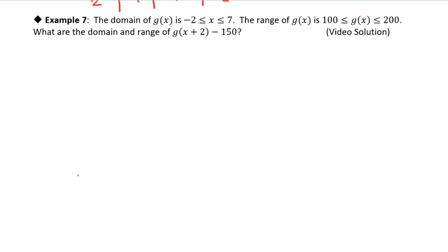Okay, so we are given the function g of x plus 2 minus 150. So this is being transformed to the left by 2 and down by 150. That's what those transformations are going to do to that function.